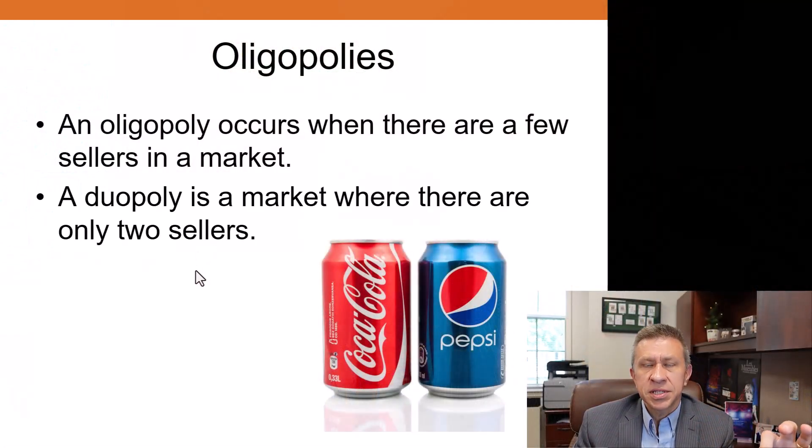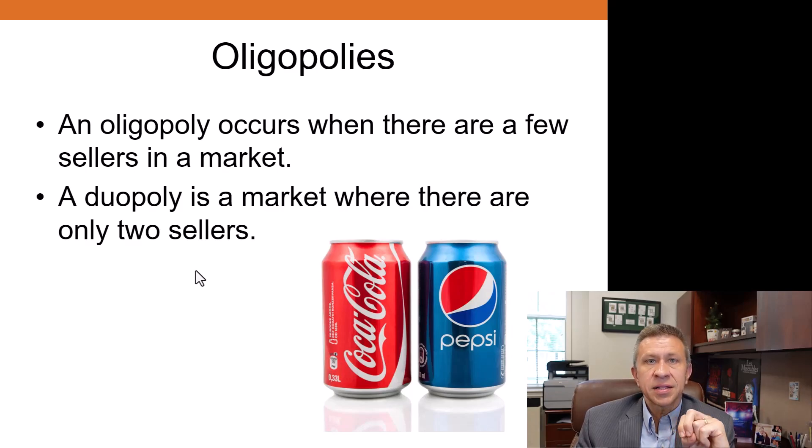A duopoly is a market where there are two firms competing with each other. A duopoly is a market where there are two sellers exactly. It's a subset of what we would call oligopolies—markets where there's a few sellers and each has pretty significant market power.